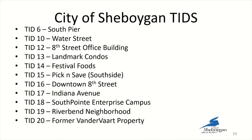TID 13 is the Landmark Condo — the landmark building that burned in 2007 and was rebuilt, including the Founders Club or the old Sheboygan Senior Community. TID 14 was originally created for Festival Foods development and has since expanded to include Meijer Foods. TID 15 is the Pick and Save property and some residential property on the south side of Sheboygan. TID 16 is downtown A Street, running from the river up to the Weill Center and expanding east to include the Wells Fargo property. TID 17 is Indiana Avenue, from the lake out to 14th Street and down South 7th Street to just shy of King Park. TID 18 is the South Point Enterprise Campus, the new business center on the south side.